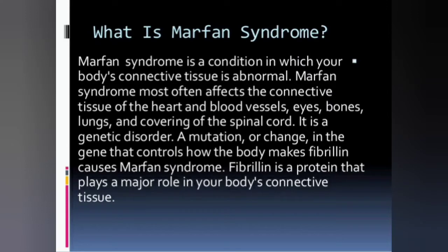Marfan syndrome is a condition in which your body's connective tissue is abnormal. It is a genetic disorder of connective tissue named after Anthony Marfan, a French pediatrician who first described the condition in 1896. Marfan syndrome most often affects the heart, blood vessels, eyes, bones, lungs, and coverings of the spinal cord.